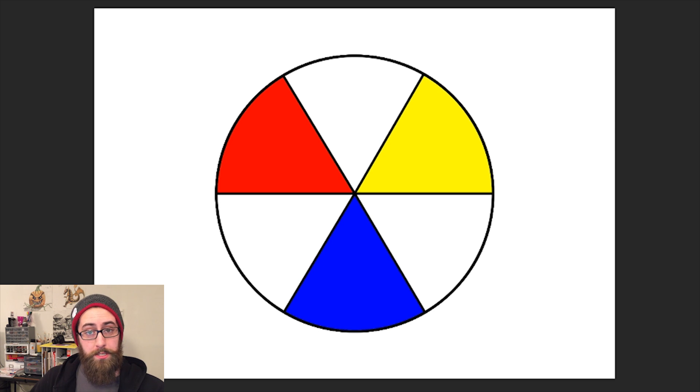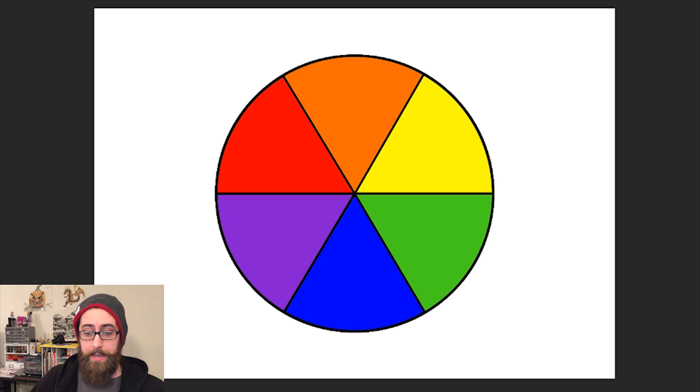Now in between you'll notice that there are spaces for these secondary colors which can be made by a combination of two primaries. This including red and yellow making orange, yellow and blue making green, and blue and red making purple. Now here is our very basic color wheel that you'll find if you take a look around online.